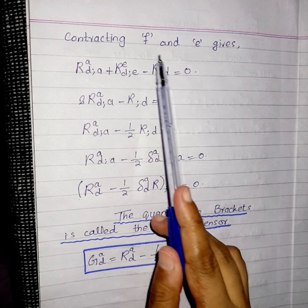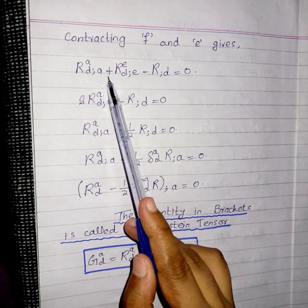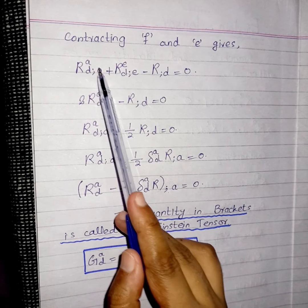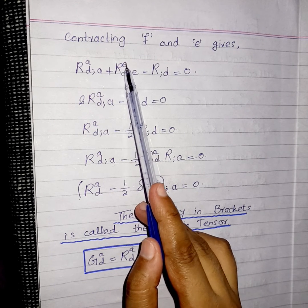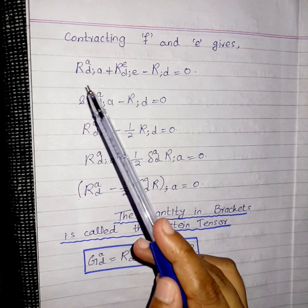Now if we further contract f and e then we will get this equation. You know that here a and e are the dummy variables so I can also replace e by a like it is just a representation.